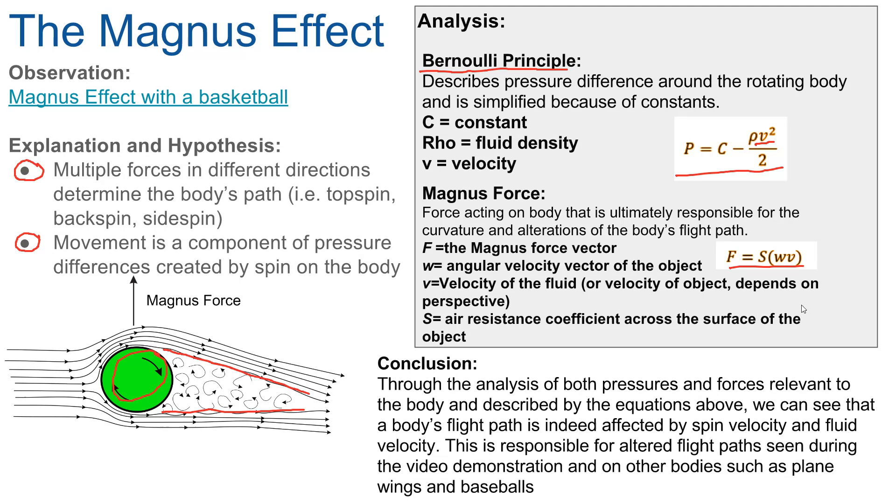Through the analysis of both pressures and forces relevant to the body and described by the equations previously mentioned, we can see that the body's flight path is indeed affected by spin velocity and fluid velocity. This is responsible for altered flight paths seen during the video demonstration and on other bodies such as plane wings and baseballs.